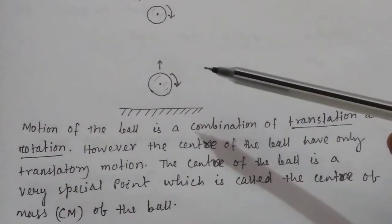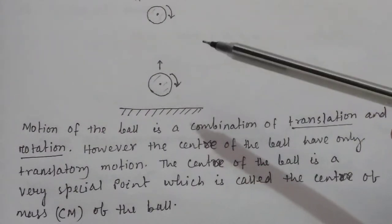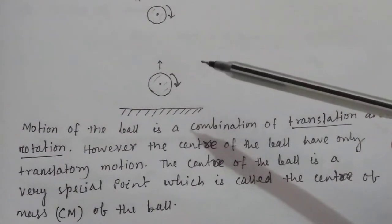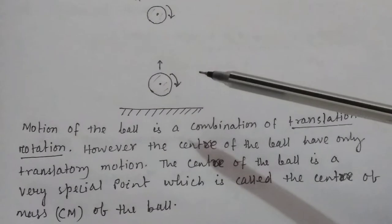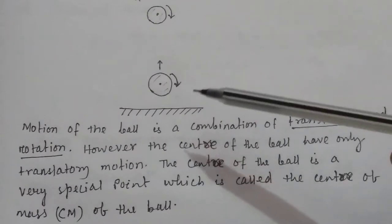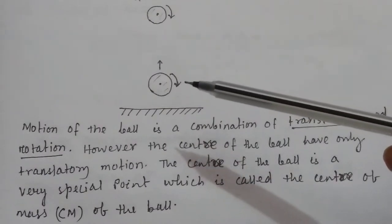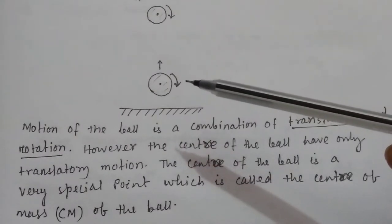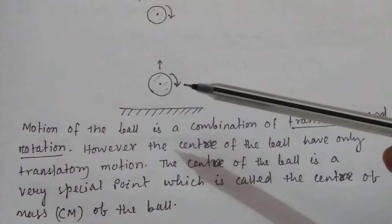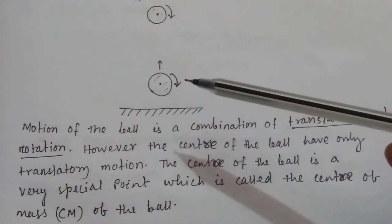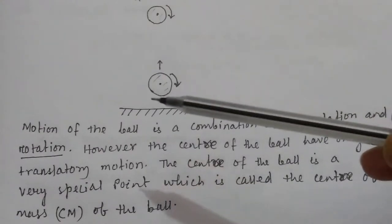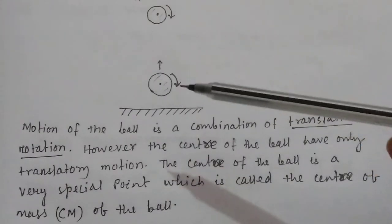In the type of motion where we have both translation as well as rotation, we take the center of mass of the rigid body instead of taking the whole mass of the body.